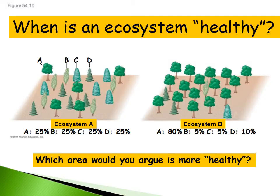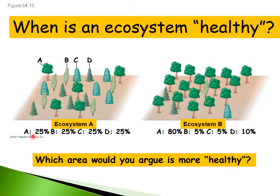I'm going to start this lecture off with a relatively simple question. Looking at these two pictures — on the left and on the right — you have two ecosystems, ecosystem B and ecosystem A. Within each ecosystem there are four different species of trees: species A, B, C, and D. The question is simply: which ecosystem would you argue is more healthy? The numbers shown are the relative percentages of each ecosystem's populations for that different number of species. Which ecosystem is actually more healthy based upon these images and percentages?